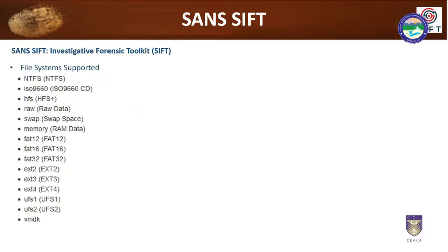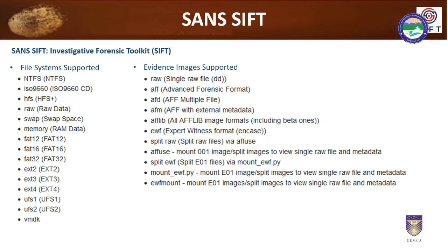The file systems SIFT supports include NTFS, ISOs, HFS, RAW, swap files, memory files, dumps, FAT16, FAT32, FAT12, EXT dumps, UFS, VMDKs — anything you can imagine. Evidence formats supported are RAW (single file in DD format), AFF (Advanced Forensic Format), AFD (AFF multiple files), AFM (AFF with multiple external data), RAW splits, EWF, and split E01 files — and you can also mount them. It is one of the best tools for anyone in forensics.